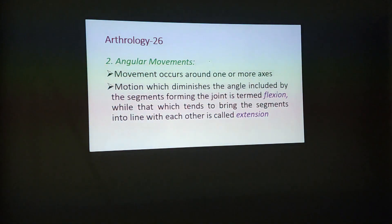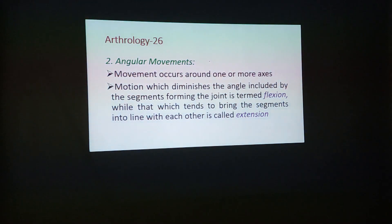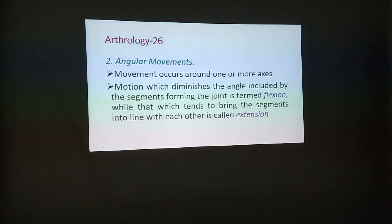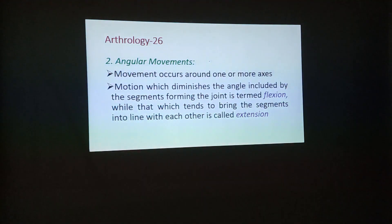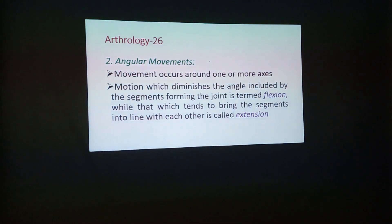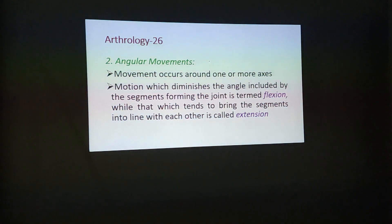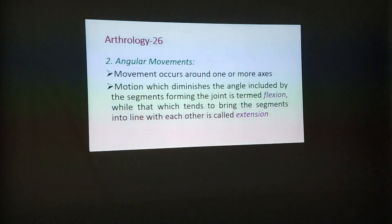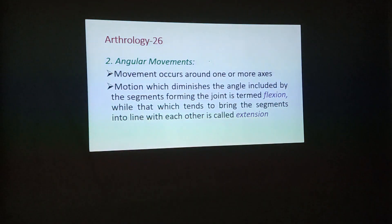Number two is angular movements. These movements occur around one or more axes. The motion which diminishes the angle included by the segments forming the joint is termed flexion, whereas the movement which tends to bring the segments into line with each other is called extension.